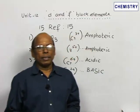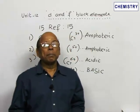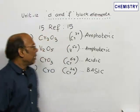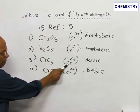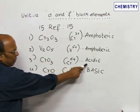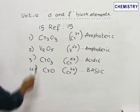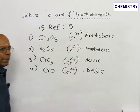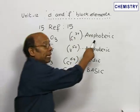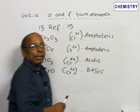For example, CrO3, with chromium in the +6 oxidation state, is acidic. Cr2O3, with chromium in the +3 oxidation state, is amphoteric, meaning it shows both acidic and basic nature.